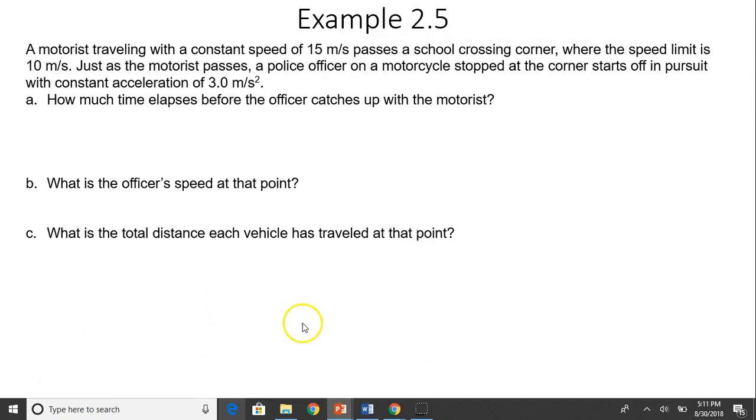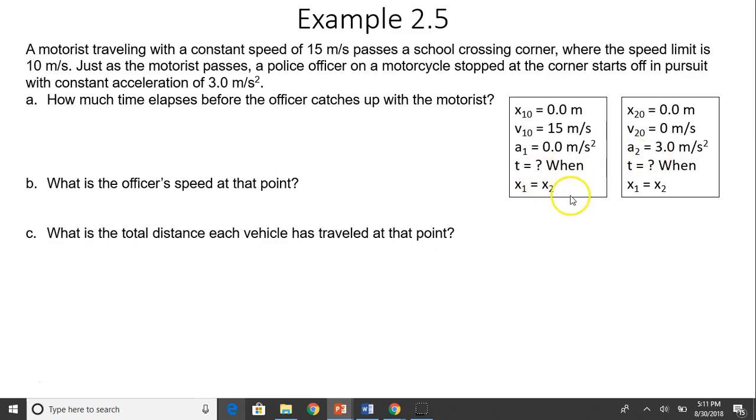Next example. A motorist traveling with a constant speed of 50 meters per second passes a school crossing corner, where the speed limit is 10 meters per second. Just as the motorist passes, a police officer on a motorcycle stopped at the corner starts off in pursuit with constant acceleration of 3 meters per second squared. How much time elapses before the officer catches up with the motorist? Let's write down what's given. There are two people. First is motorist. I used subscript 1 to represent motorist.